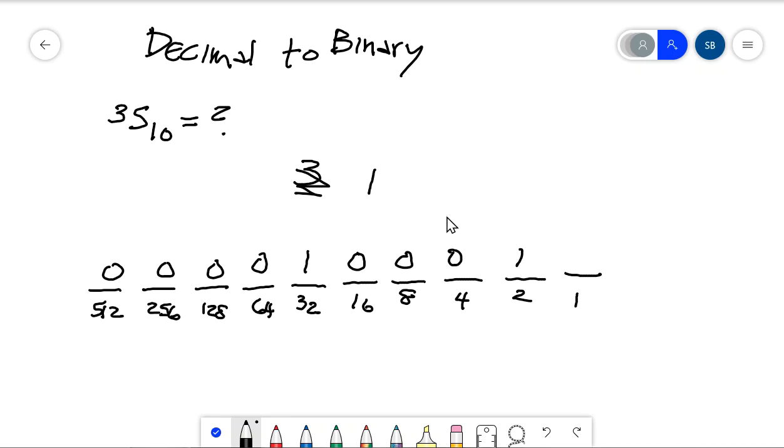In this case we start the process all over again. 1 minus 1, that's good. We can put a 1 there and 1 minus 1 is 0. So that means that we're done with the process when we get 0 and we have all these positions filled in.